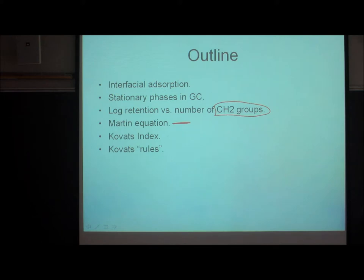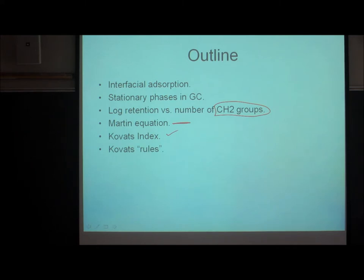This, in turn, is very useful in reporting retention. The Kovats index is a very useful measure of retention over and above retention volume, retention factor, or adjusted retention factor. In fact, you can obtain tables of Kovats indices for tens of thousands of compounds on many different stationary phases. This will lead us to a set of rules of thumb that allow you to estimate retention in gas chromatography.